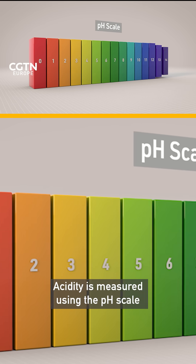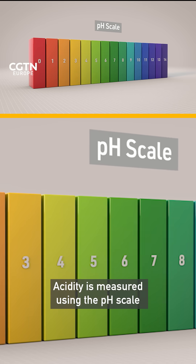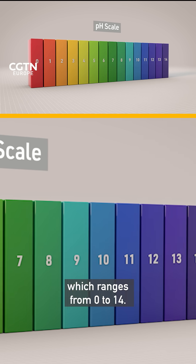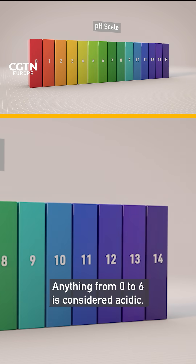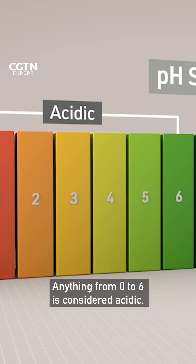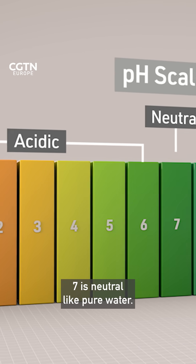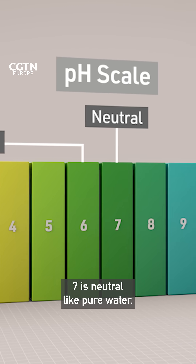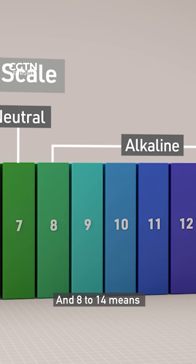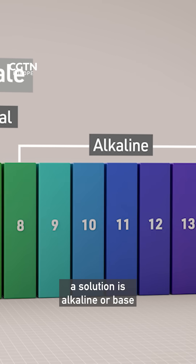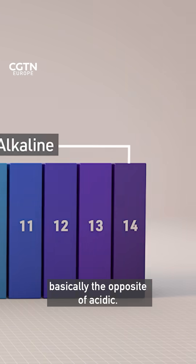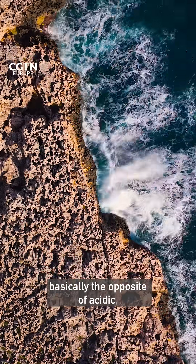Acidity is measured using the pH scale, which ranges from 0 to 14. Anything from 0 to 6 is considered acidic. 7 is neutral, like pure water, and 8 to 14 means a solution is alkaline or base — basically the opposite of acidic.